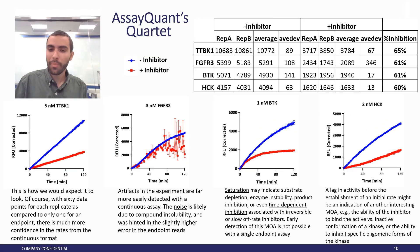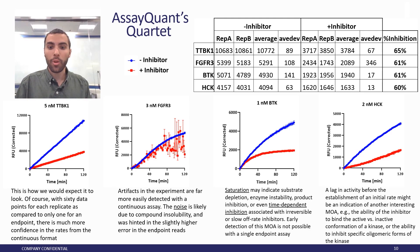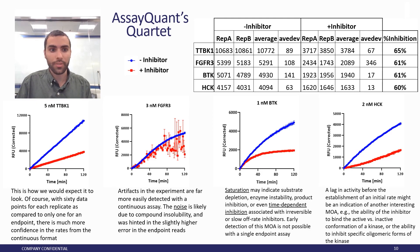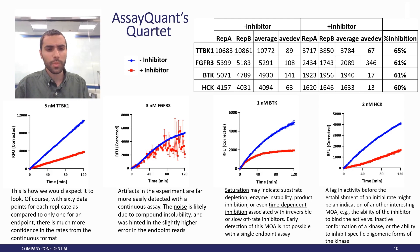Additionally, we have something known as compound-specific lag. This is an interesting observation — we're not completely sure what it may mean, but we hypothesize it could be an interesting MOA indication, such as binding to an active versus inactive conformation of a kinase — the difference between type one and type two inhibitors — or it could be different oligomeric forms of the kinase that compounds might have a preference for. All four of these curves are very different from each other. We'll still calculate the percent inhibition in terms of steady state velocity, but we'll call these out — and in cases where we see time-dependent inhibition, we'll report that inhibition and let you know it's happening.